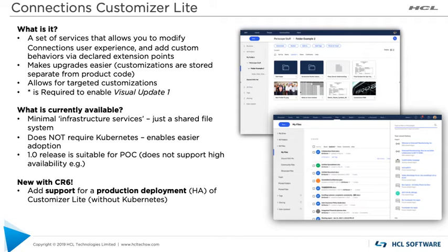We actually made one big change. We had the Customizer Lite available as a proof of concept, but we had not yet formally GA'd it — GA being general availability — because it was not available in a high availability environment. That is the big change we're adding with CR6: we now officially support a production deployment with high availability for the Customizer. So where before you probably just used it to kick the tires, now with Customizer Lite, if you only want that and not the full Component Pack, you can do that.